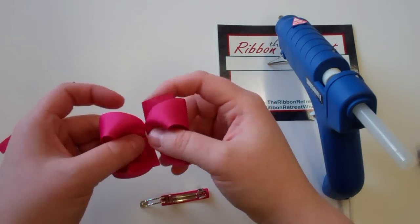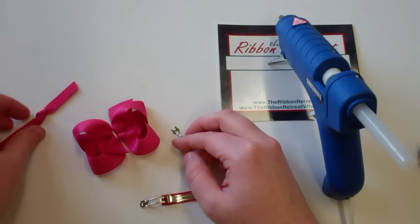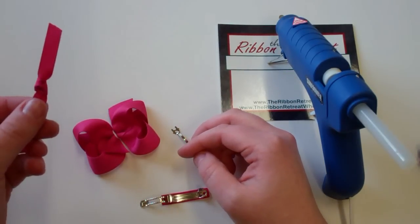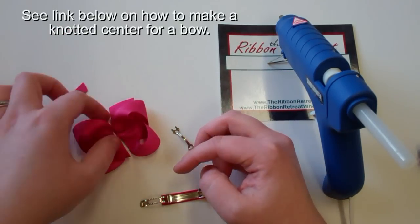I've got a twisted boutique bow here that I've also made on the bow maker. And a knotted center ready to put on.